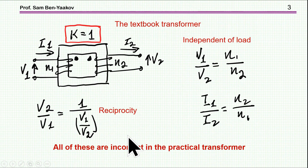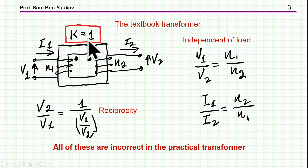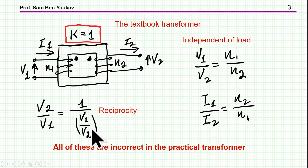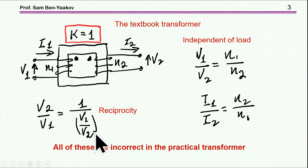Here I'm showing a basic transformer: a core with two windings, winding one and winding two, and the coupling coefficient is one. This is one of the requirements of an ideal transformer. We know that for a transformer like this, the voltage transfer ratio V1 to V2 is N1 over N2, where N is the number of turns, and the current transfer ratio is N2 over N1. We take it for granted that the reverse transfer ratio from V2 to V1 is 1 over (V1/V2). These are the very basic characteristics of a transformer, but this is correct only for the ideal transformer.